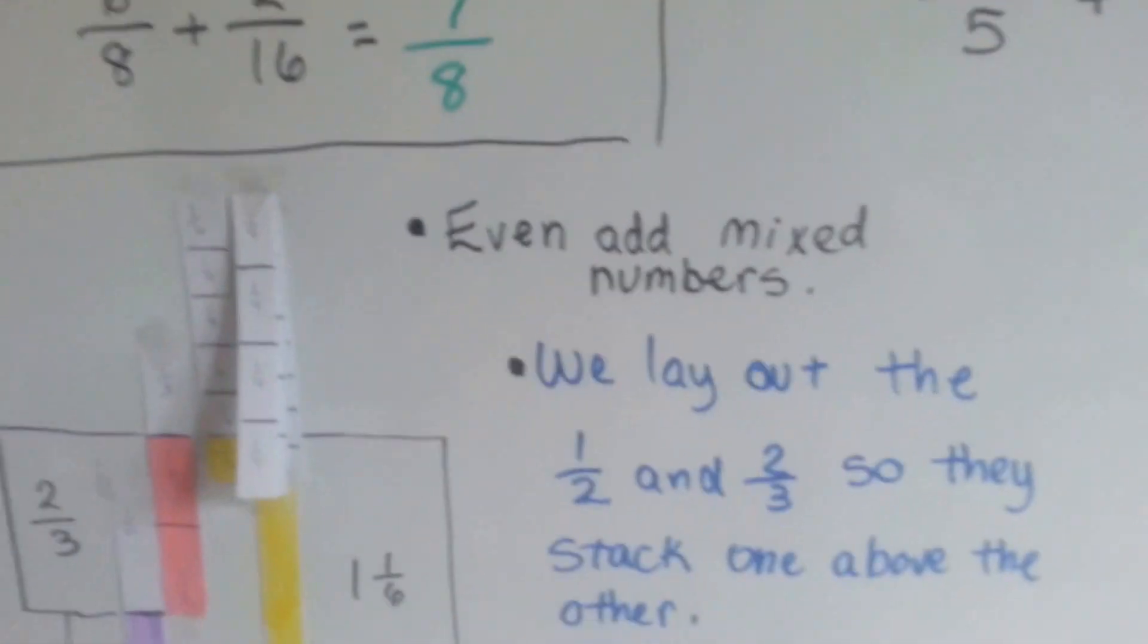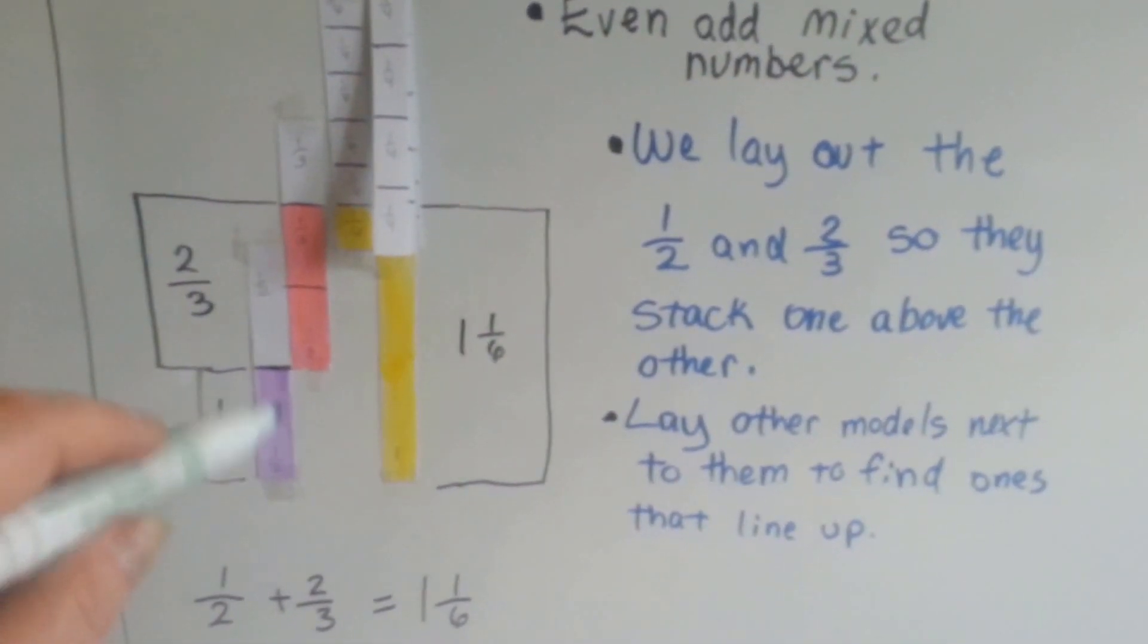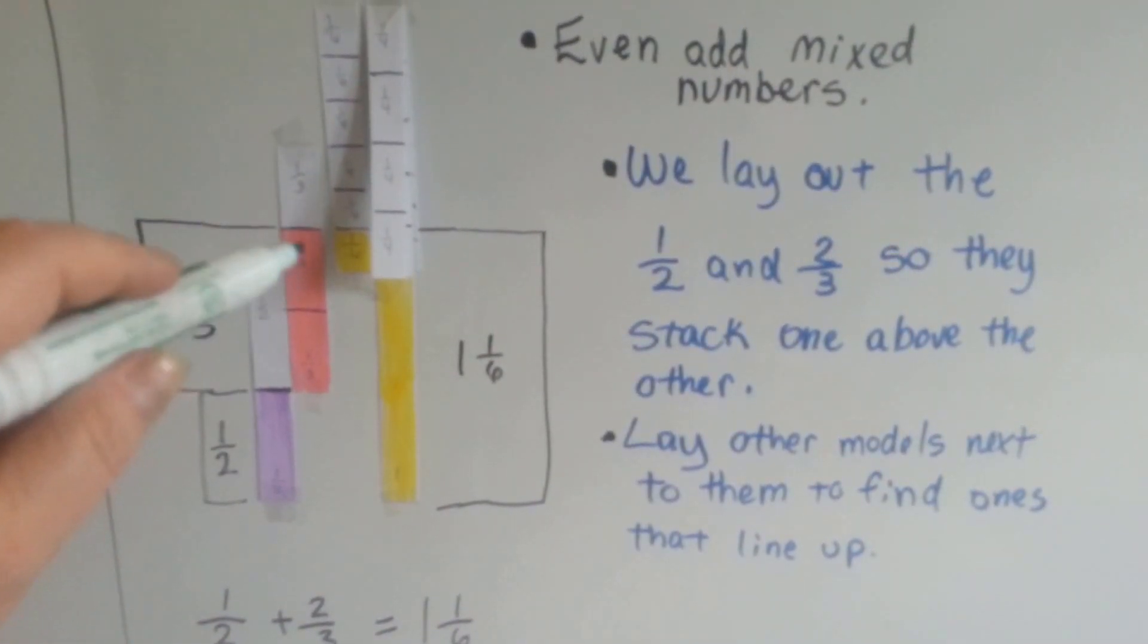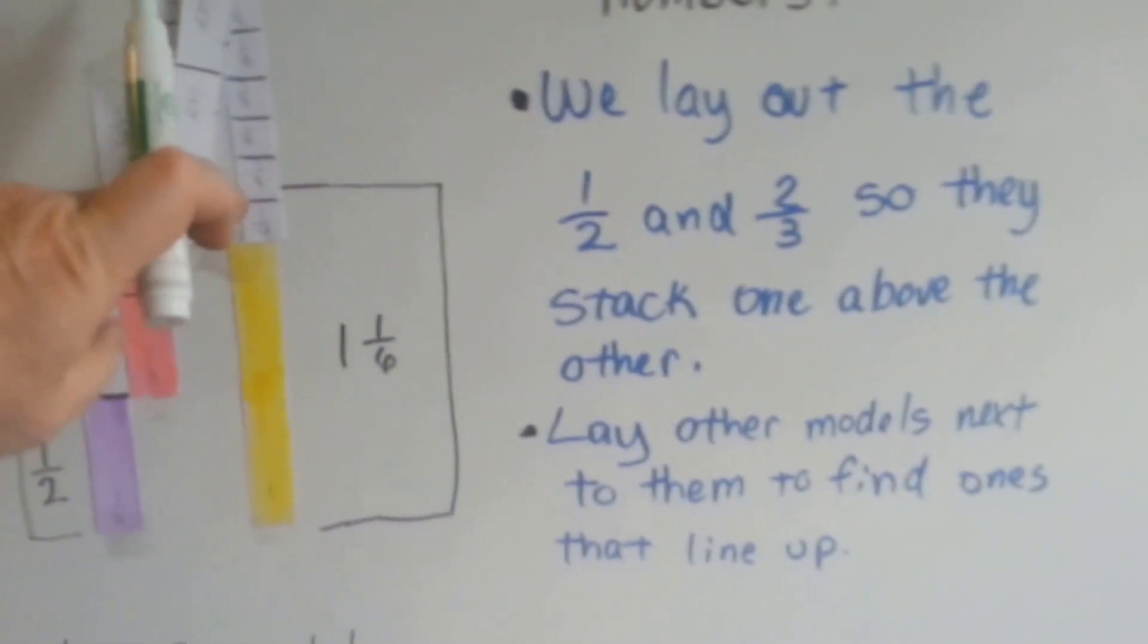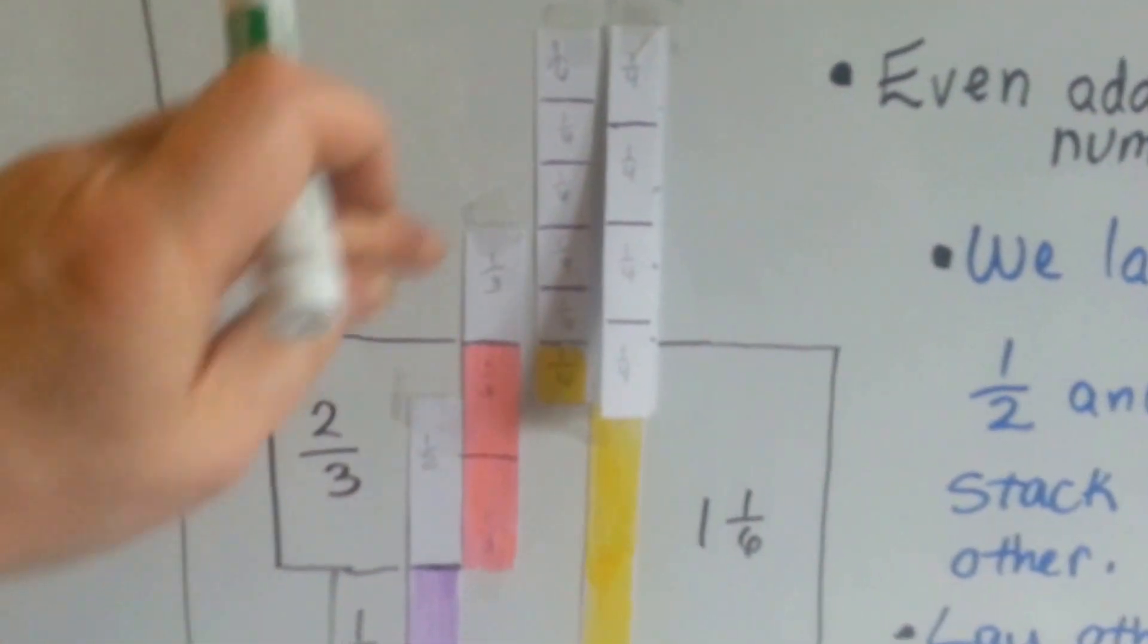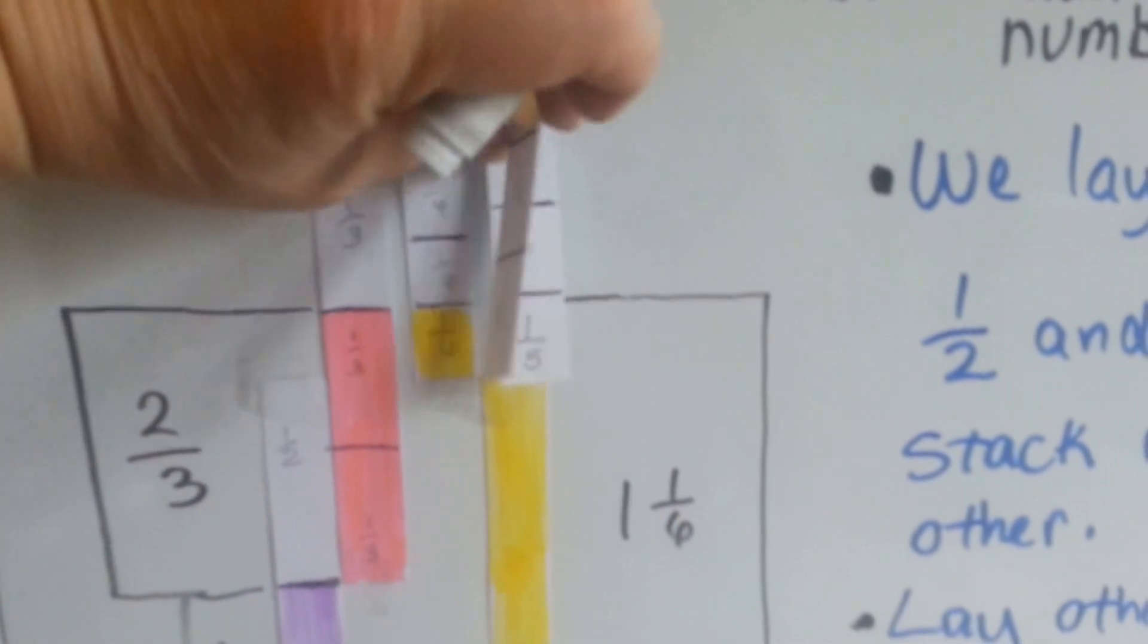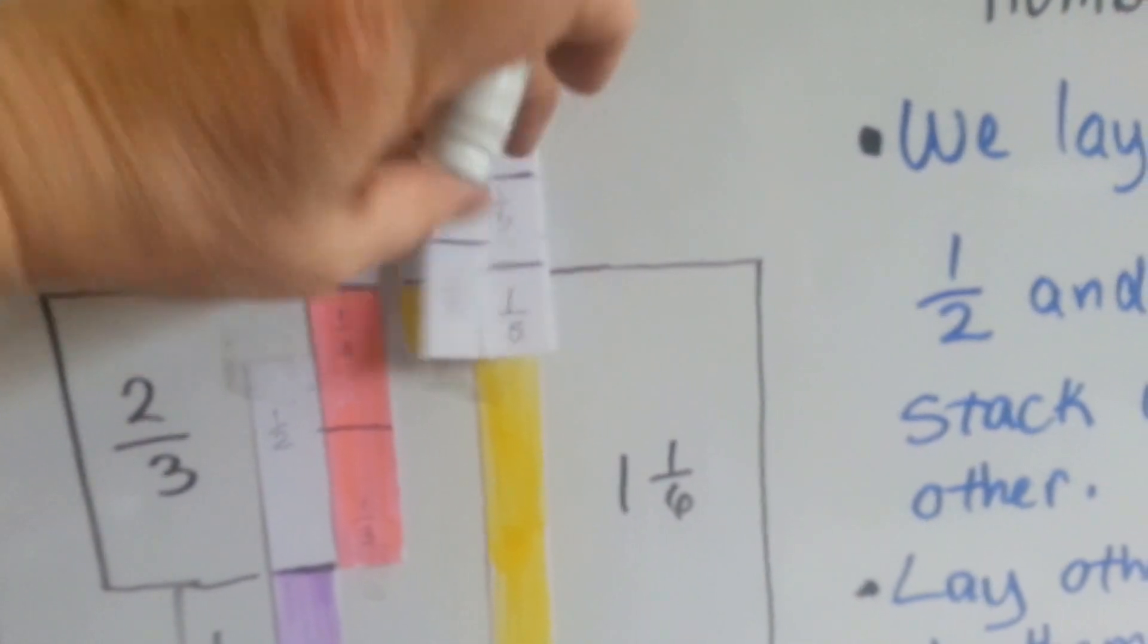We can even add mixed numbers. We lay out one-half and two-thirds so they're stacked up like this so we could see what the total length would be. And then we lay a full one next to it. Then we compare other units and we can see that the fourths right here don't line up. We can see the fifths almost line up but don't quite.